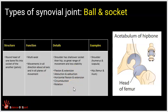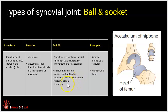We have ball and socket joints in two locations: the shoulder and the hip. The hip socket is a much deeper socket than the shoulder. The shoulder has a much greater range of movement but a little less stability, whereas the hip joint is designed with a deeper socket to enhance stability — we don't want it to readily dislocate. The shoulder joint is more vulnerable to dislocation because the socket is shallower. Movements at the ball and socket joint include flexion, extension, abduction, adduction, horizontal flexion and extension, circumduction, and rotation. The two locations are between the head of the humerus and the scapula at the shoulder, and between the head of the femur and the ilium at the hip.